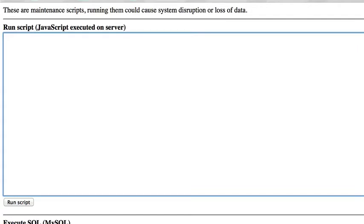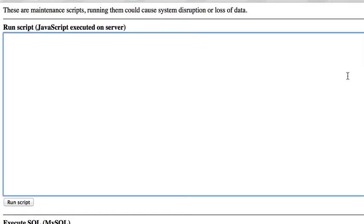There are two ways to get user preferences on the server-side — your own user preferences or somebody else's user preferences. We actually have the ability to work with either the current user's preferences or a different user's preferences. The first example we'll cover is manipulating the current user's preferences. To do that, the format is gs.getUser() to get the current user object, and then the API call is setPreference().